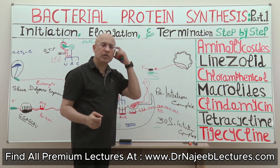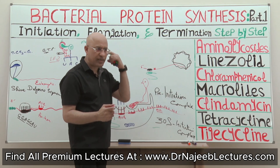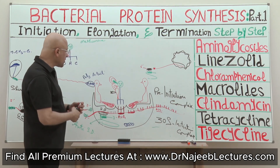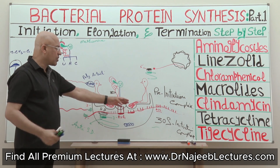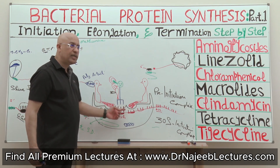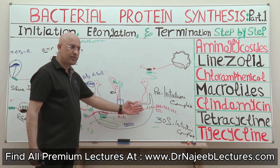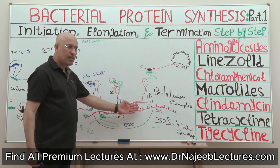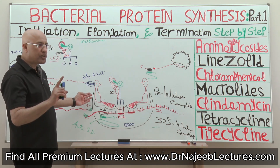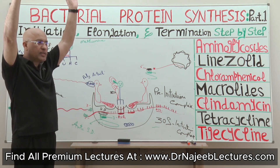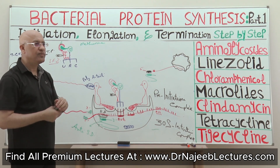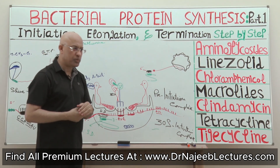Let's review the function of initiation factors number 1 and 3. They bind on the flanks of the tRNA binding sites. One important function is they prevent the premature binding of the 50S ribosomal subunit.